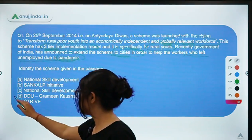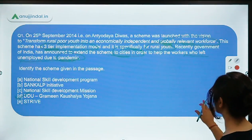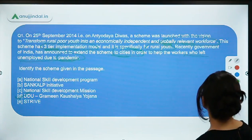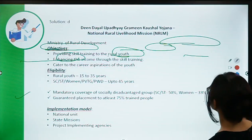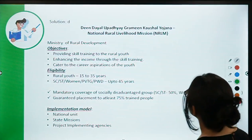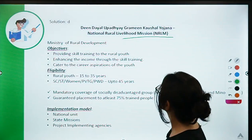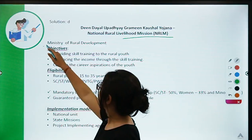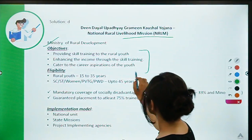The correct answer is D — the Deendayal Upadhyay Grameen Kaushal Yojana. This scheme is under the National Rural Livelihood Mission and was launched by the Ministry of Rural Development. It has three objectives.